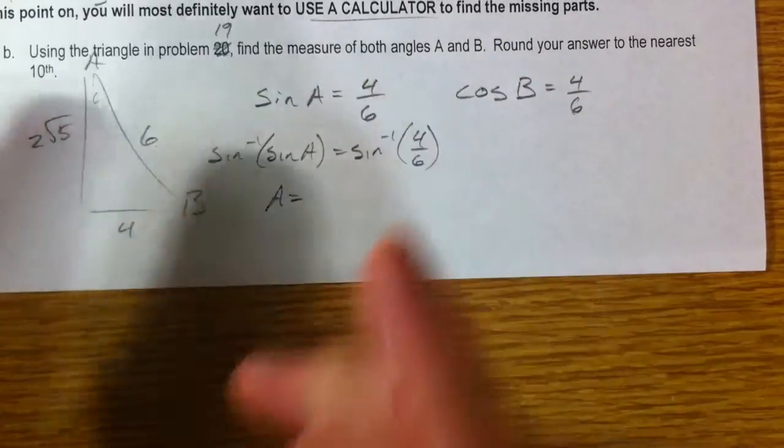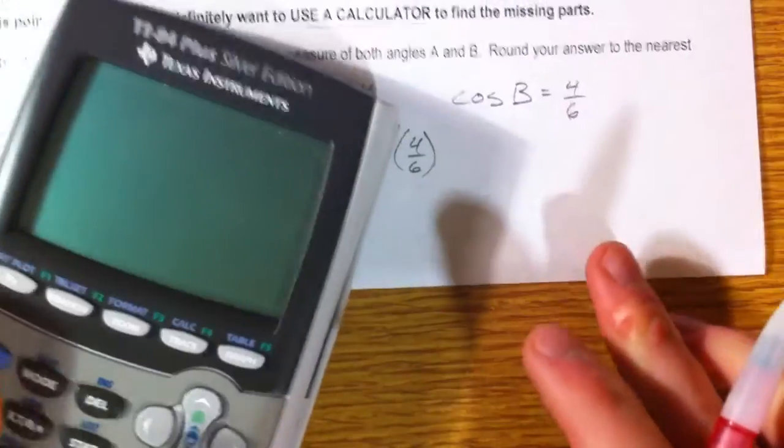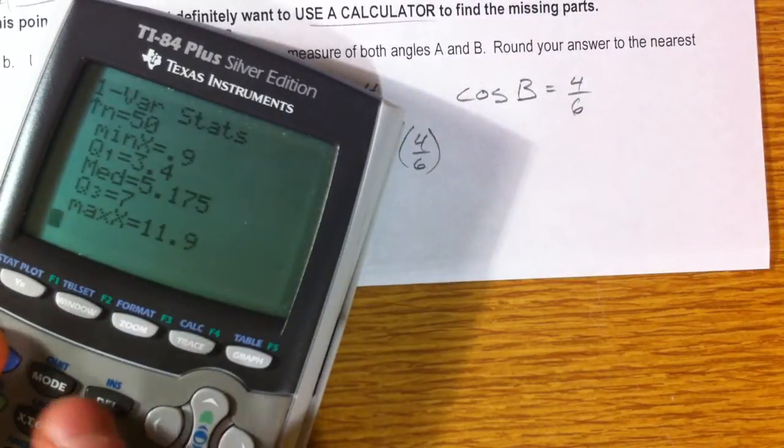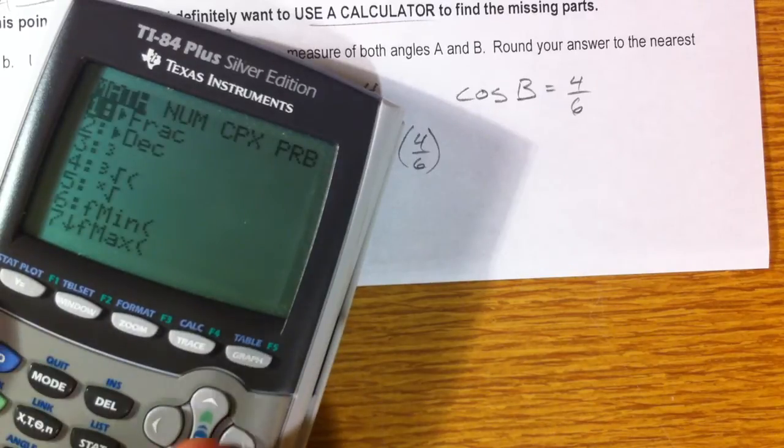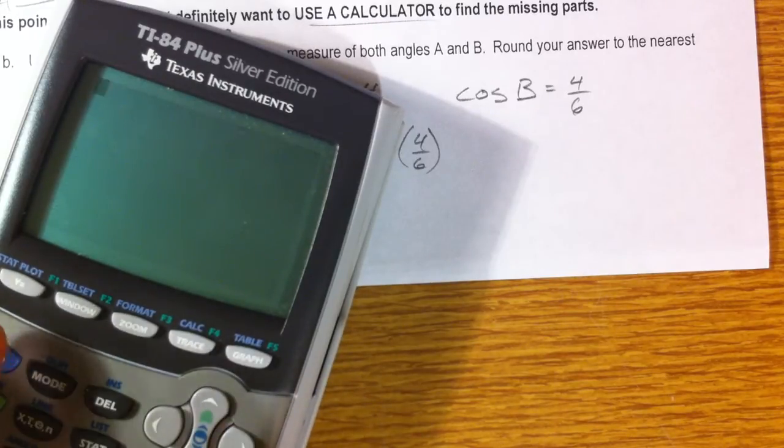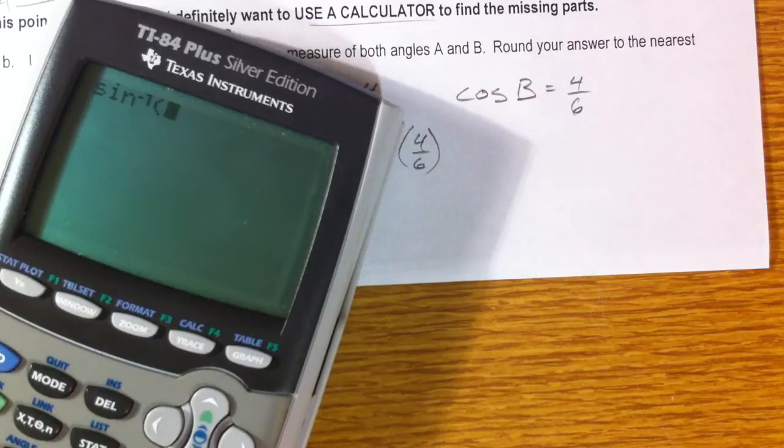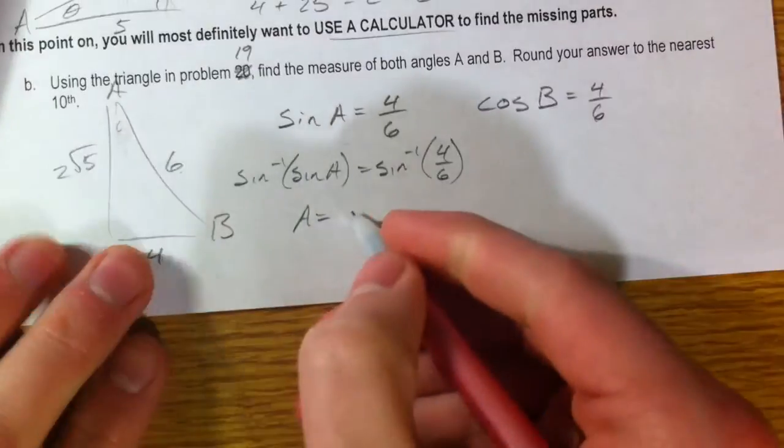And so you get angle A is the inverse sine, and so you have to hit the second button. I'm going to double check that I'm in degree mode, because I'm using degrees. And I'm hitting second, and then the sine button, of 4 divided by 6. So you get 41.8 degrees.